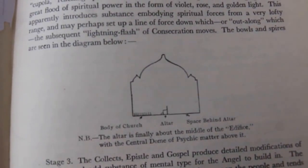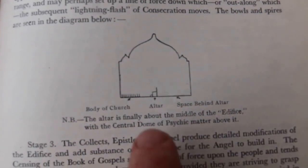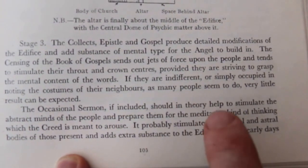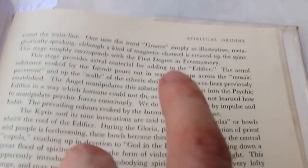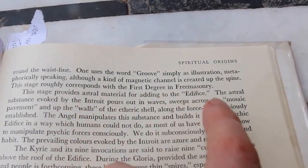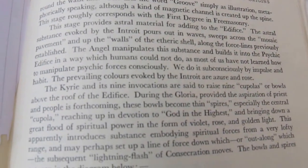Just looking at the book by Furs Morish — this is the cover, and it's so fitting to have this basic piece of architecture here. As is written in here: 'The altar is finally about the middle of the edifice, with the central dome of psychic matter above it.' It also talks about building angels and the participants in ritual, the astral matter — 'the stage provides the astral material adding to the edifice.' This is what I would suggest is actually being depicted, and that's why it's all around the world over and over.